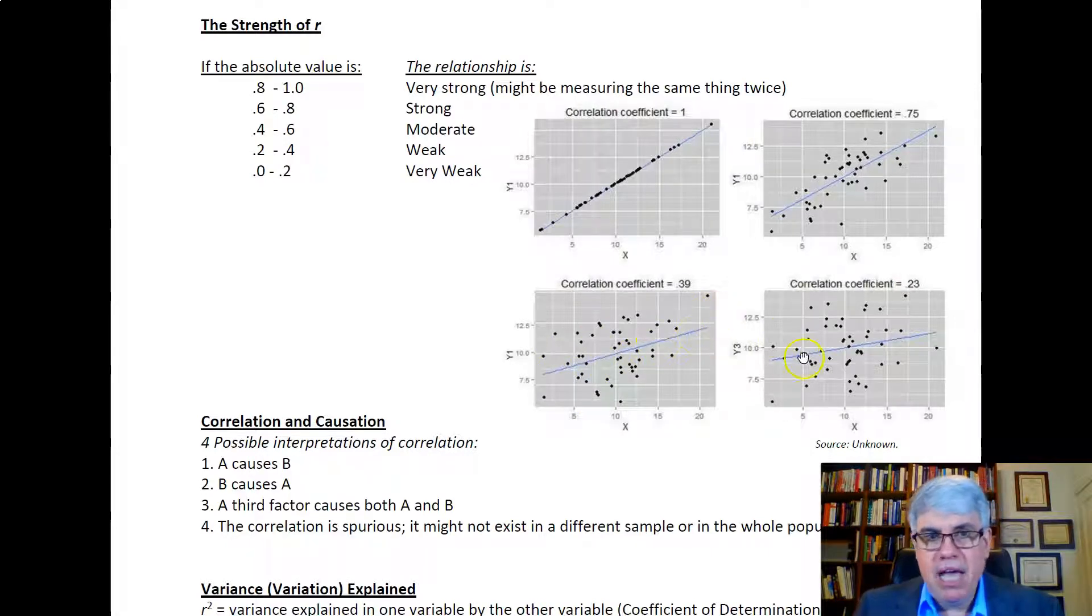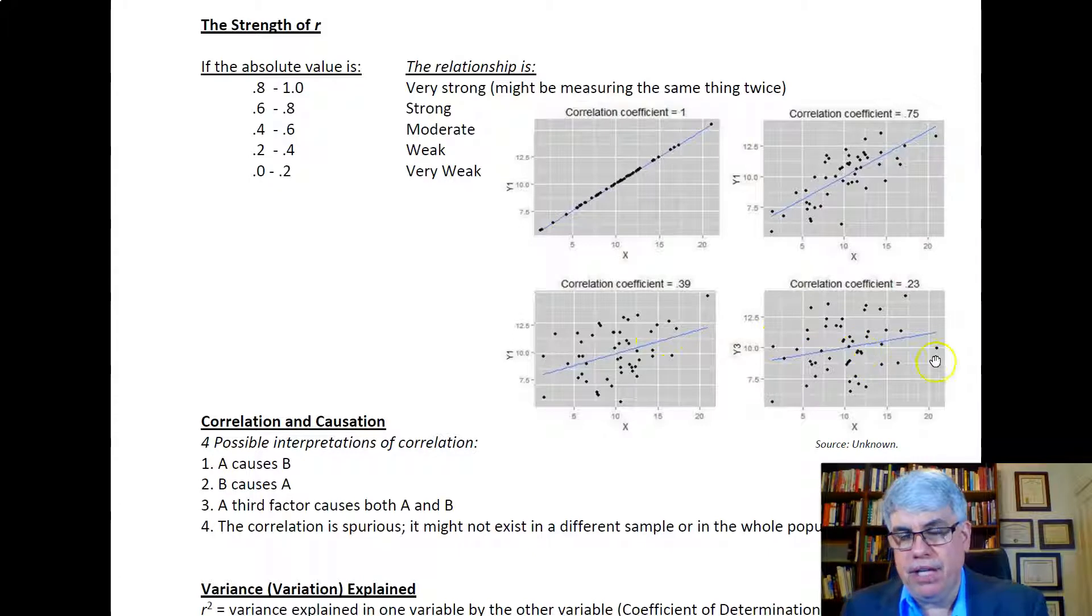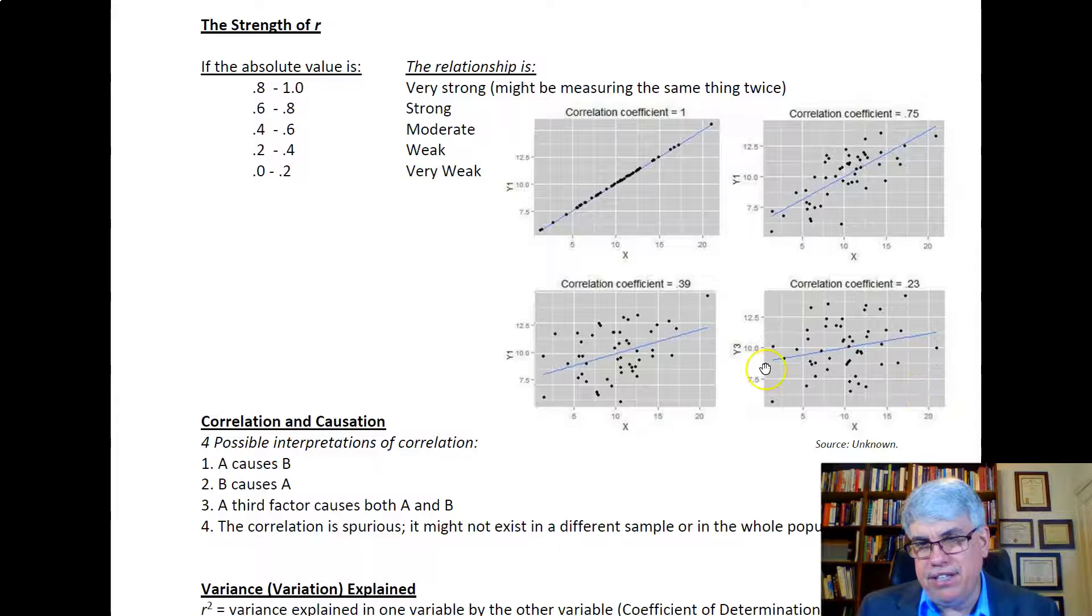Here we have a weak correlation of 0.23, and without that line we might struggle to see what the tendency was. A good number are close to the line, but most of them aren't too close.